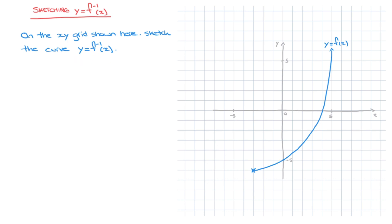To do that, there are two important things to remember. The first thing to remember is that the curve of y equals f of x and the curve of its inverse, y equals the inverse of f of x, are the mirror images of each other across the line y equals x.